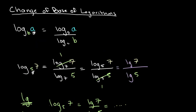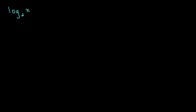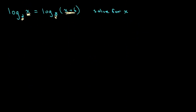Sometimes when we're solving equations regarding logarithms, we want to get both sides to have the same base so that we can equate them. Let's say we have log base 2 of x is equal to log base 8 of x plus 6, and we need to solve for x. Since both sides don't have the same base, we apply the law of the change of base. Changing the right side to base 2 gives us log base 2 of (x plus 6) divided by log base 2 of 8.